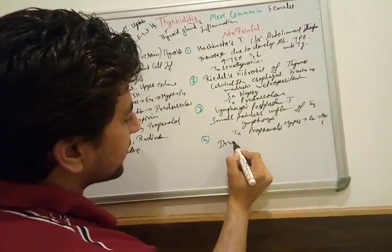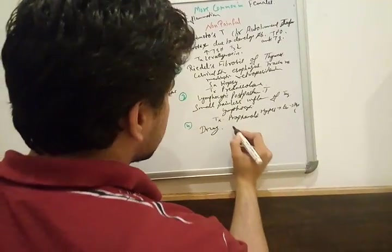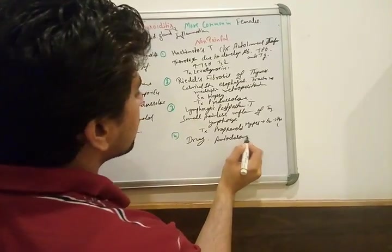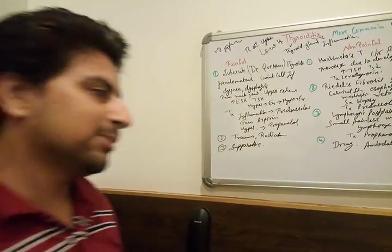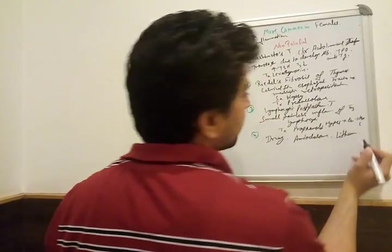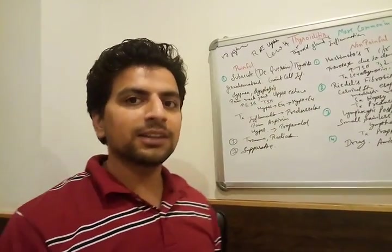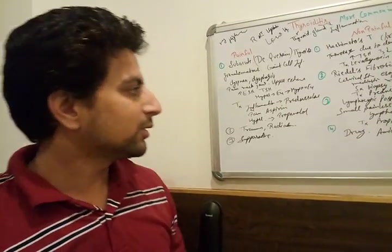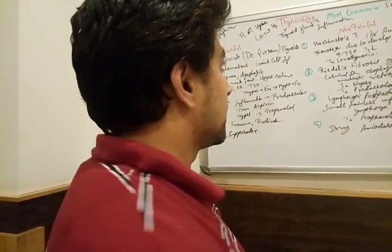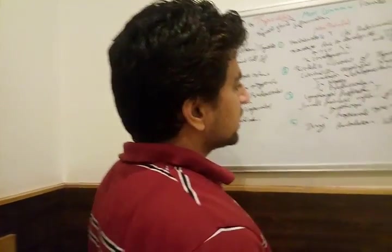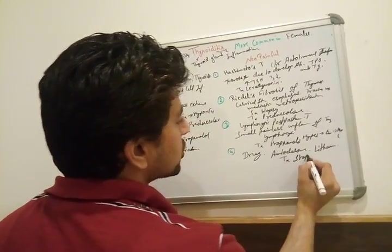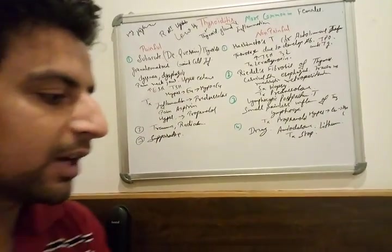Drug-induced thyroiditis is also painless. Drugs that cause it include amiodarone, used in atrial fibrillation, and lithium, used as prophylaxis in bipolar disorder. The treatment of choice is to stop the offending drug, and the prognosis is very good.